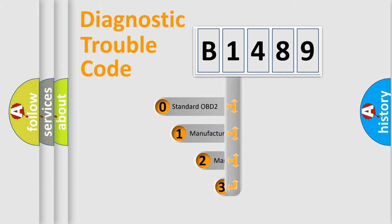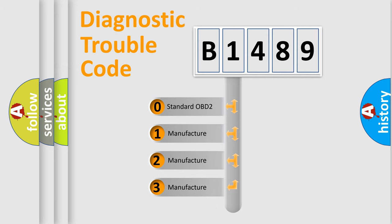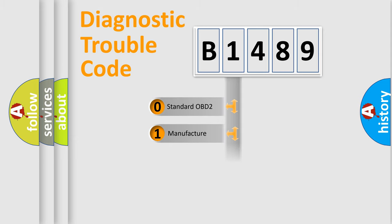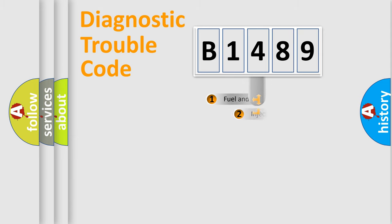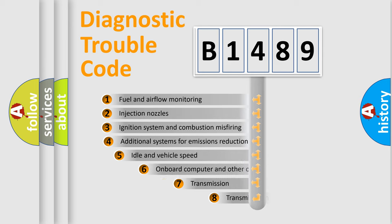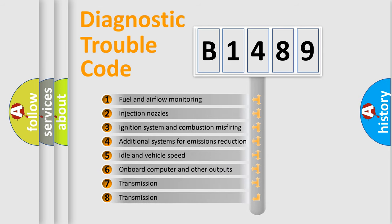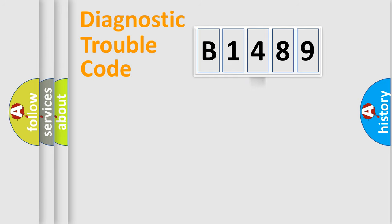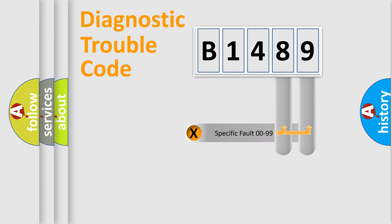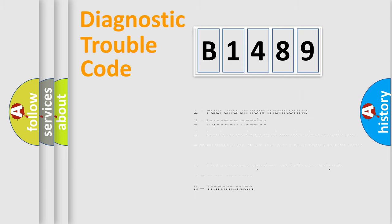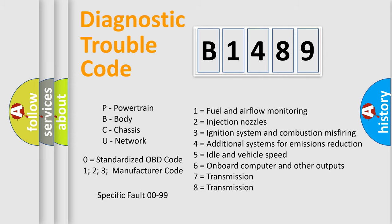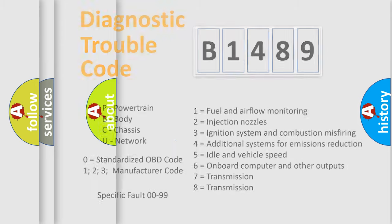This distribution is defined in the first character of the code. If the second character is expressed as zero, it is a standardized error. In the case of numbers 1, 2, or 3, it is a more manufacturer-specific expression of a car-specific error. The third character specifies a subset of errors. Only the last two characters define the specific fault of the group. This division is valid only if the second character is expressed by the number zero.